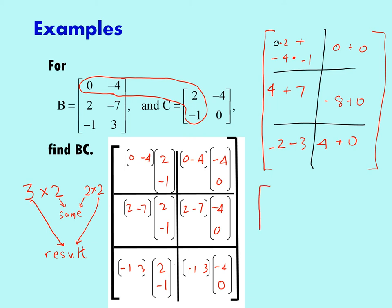For a final answer, column 1 is going to be 4, 11, negative 5, and column 2 is 0, negative 8, 4. That's going to be the product of the two matrices.